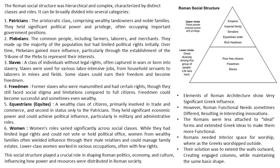Discussing about the Roman social structure, it comprises six categories: patricians, plebeians, slaves, freedmen, equestrians and women. Patricians comprised the aristocratic class of wealthy landowners and noble families. Plebeians were the common people, including farmers, laborers and merchants. Slaves were a class of individuals without legal rights. Freedmen were former slaves who were manumitted and had certain rights. Equites were a wealthy class of citizens primarily involved in trade and commerce, second in status only to the patricians. Women's roles varied significantly across social classes, and they had limited legal rights.